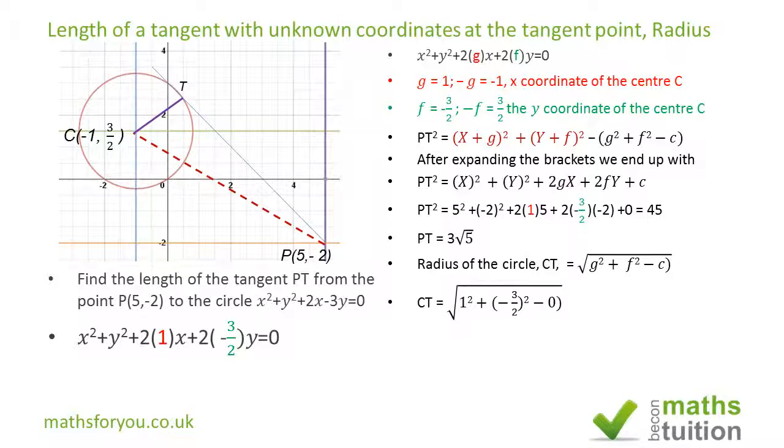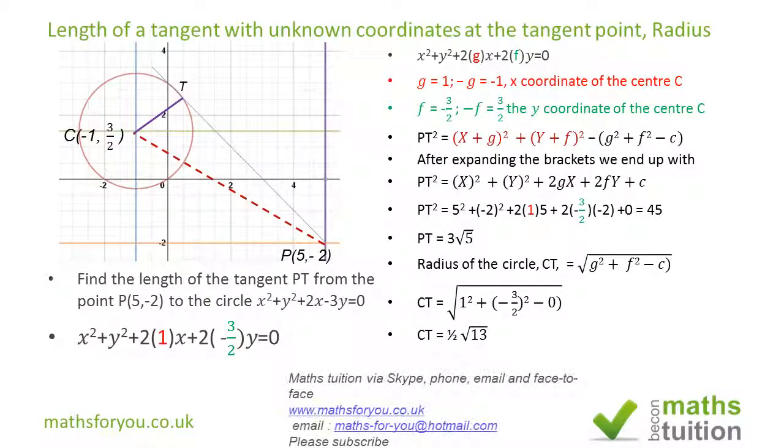1² = 1, and (-3/2)² = 9/4. We can rewrite 1 as 4/4, so 4/4 + 9/4 = 13/4. Therefore, CT = √(13/4) = (1/2)√13.